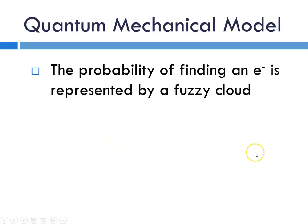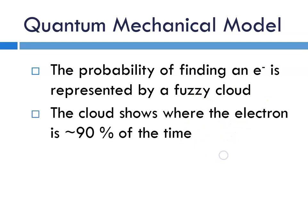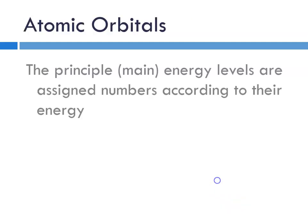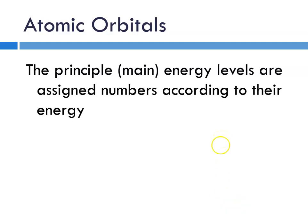So what we're talking about with the quantum mechanical model, and the chief difference between it and Bohr, is that we talk about probabilities of finding an electron. And we represent that with something called a fuzzy cloud. And the cloud shows where the electron is about 90% of the time. So we have very specific names and addresses for locating an electron in space.